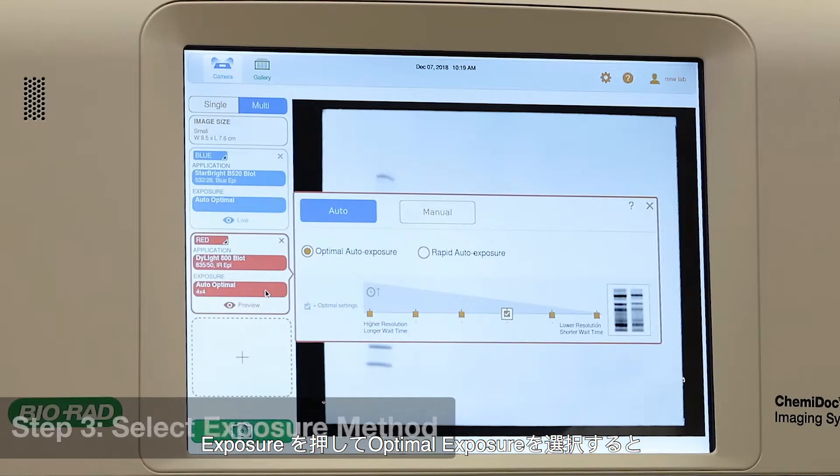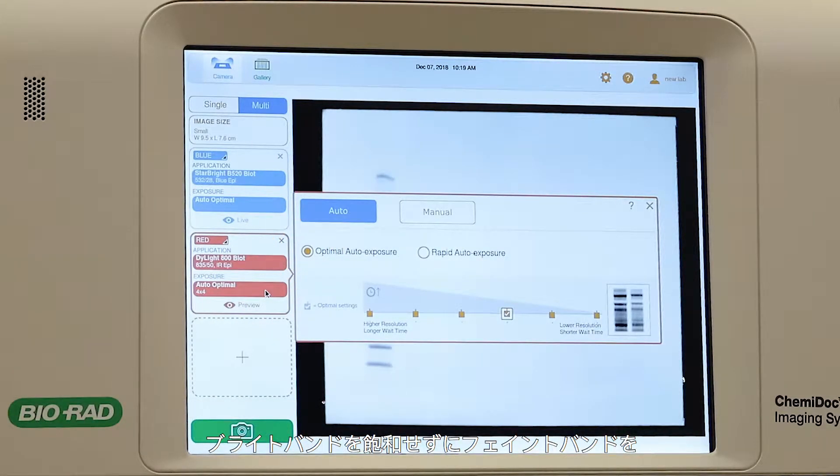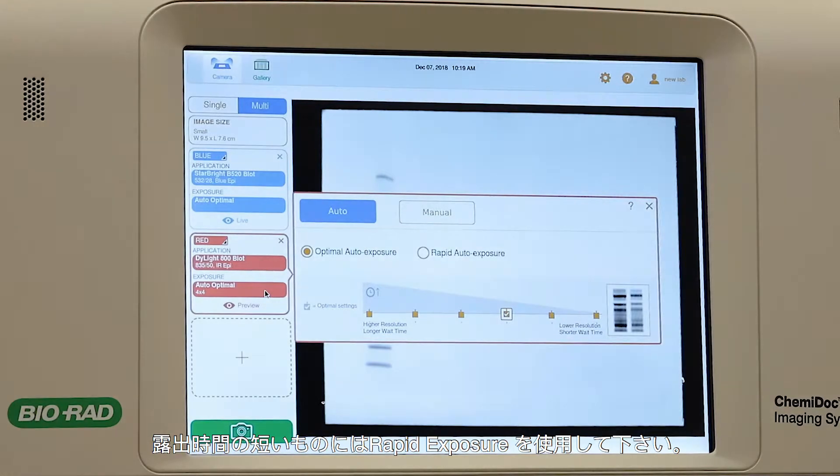Tap Exposure. Select Optimal Exposure to use the full dynamic range of the instrument to show faint bands without saturating bright bands. Use Rapid Exposure for shorter exposure times.